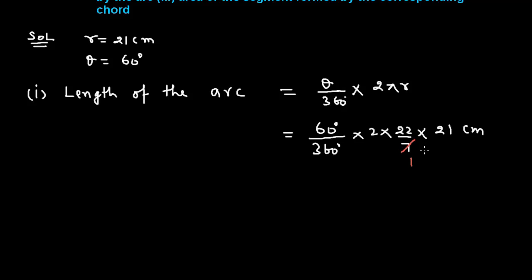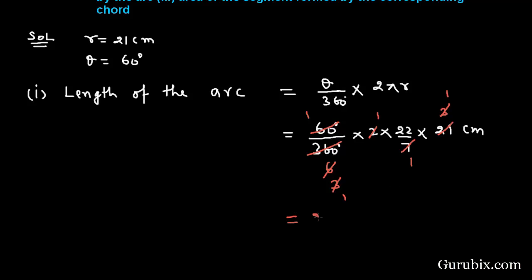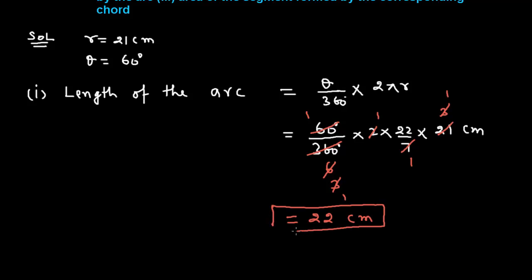Cancelling: 7 divides into 21 three times, 60 divides into 360 six times, and simplifying the remaining terms gives us 22 centimeters. So the length of the arc is 22 centimeters. This is the solution to part 1.